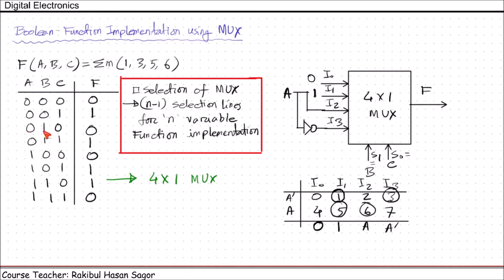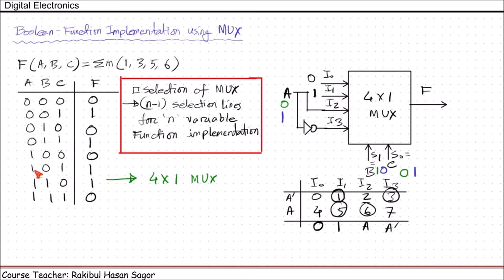Let's verify. Suppose we give A=0, B=1, C=0. The function output should be 0. With selection 10 (B=1, C=0), I2 will be passed. The value of I2 is A, and A=0, so 0 is passed — correct. Another example: for A=1, B=0, C=1 the output should be 1. With selection 01, I1 will be transferred. I1 has constant value 1, so 1 is transferred. This function is correctly implemented using a 4-to-1 MUX.